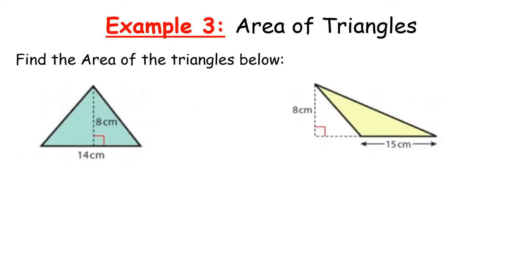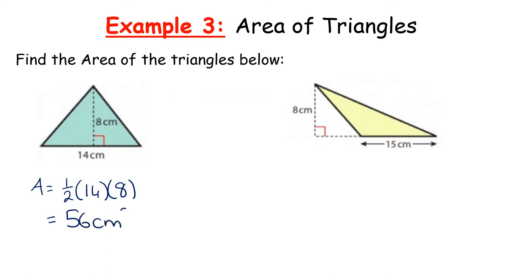For the triangle area example: Area = ½ × base × perpendicular height = ½ × 14 × 8. You can do half of 14 first to get 7, then 7 × 8 = 56, or multiply all three numbers in any order. The answer is 56 centimetres squared. Remember, because we have area, the units are centimetres squared.